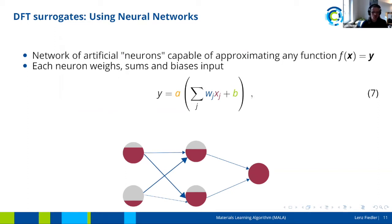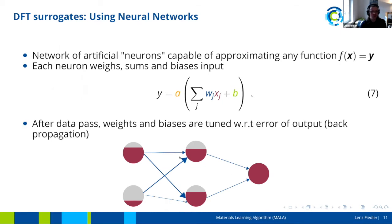By doing this for a lot of neurons — normally we have multiple layers, hundreds and thousands of neurons, millions of connections — we can in theory approximate any function. This only works if the weights and biases are tuned correctly. So after each data pass, we adjust them with respect to the error of the output. In training, we have input data for which we know the output, we let the network make its prediction, and we use the error between the predicted and actual output to adjust the weights and biases. This is called backpropagation.